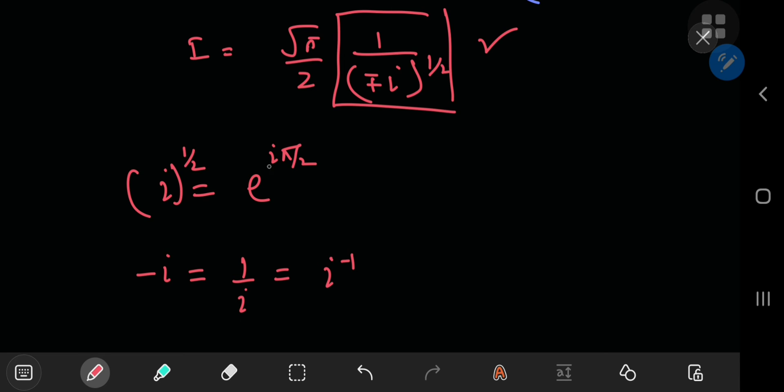So we have i, which equals e to the i pi by 2, correct? So if you take the exponent to be 1 by 2, we have this implies that the square root of i equals e to the i pi by 4.